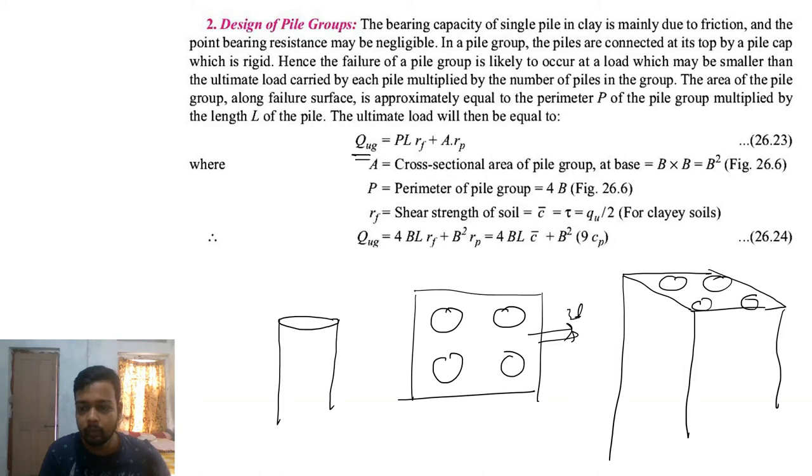One load is acting on this cross section, that means stress times this area. If square, the area is B²; if rectangle, P times D; if circle, π/4 times D².